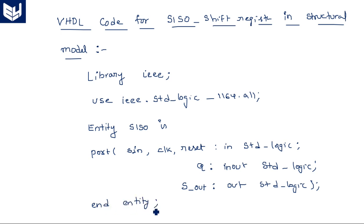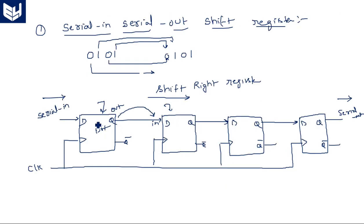The main reason for using the structural model first is that a single module is utilized multiple times. For a four-bit shift register, a single D flip-flop is used four times; for a five-bit shift register, five times. In structural coding, when a module is used for N iterations, there is no need to rewrite it each time — one instantiation can be reused for multiple applications. That is why we use the structural code style.